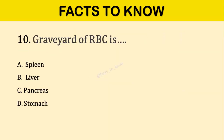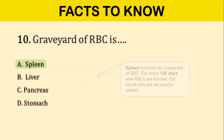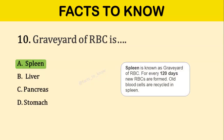Question number ten: Graveyard of RBC is? The correct answer is option A: Spleen. Every 120 days, new RBCs are formed and old blood cells are recycled in the spleen.